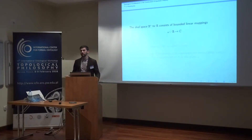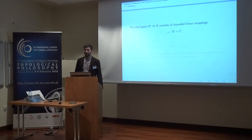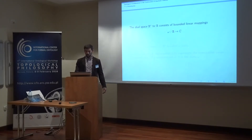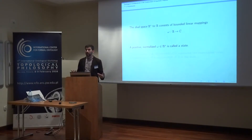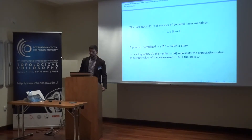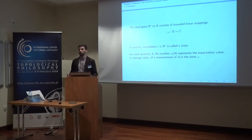In addition to the algebra A, we get the dual space A*, which consists of bounded linear mappings from our algebra A of quantities into complex numbers. There are special elements of this dual space — the positive and normalized elements — and those are the physical states. Given one of these states omega, the number that it assigns to a quantity A — omega(A) — represents the expectation value or average value of the quantity A in the state omega.